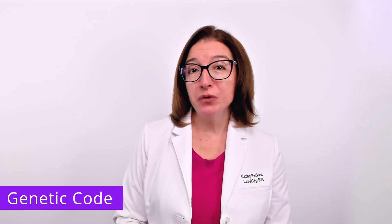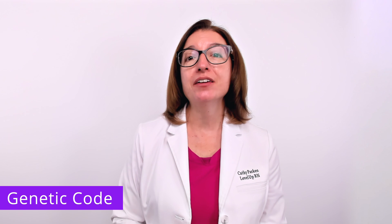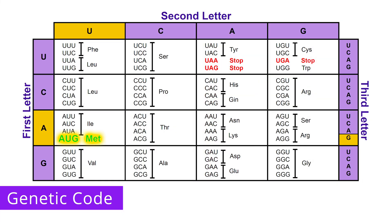There are a handful of codons in this genetic code that you definitely need to be familiar with. The first is AUG. AUG codes for the amino acid methionine, but is also the start codon that initiates the translation process. I would also be familiar with UAA, UAG, and UGA, which are nonsense or stop codons. These codons do not code for any amino acids — their role is to stop the translation process.